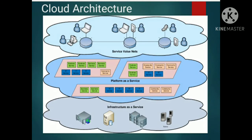Here is the model of cloud architecture. In a cloud architecture there are three segments. First one is software as a service, second one is platform as a service, and the third one is infrastructure as a service. Software as a service provides application between user and computer. Platform as a service deploys customer-created applications. Infrastructure as a service includes rent processing, storage and hardware.